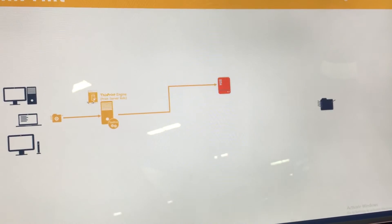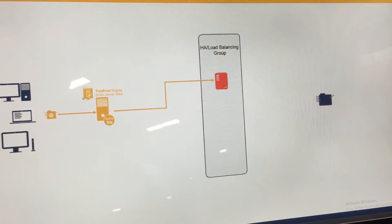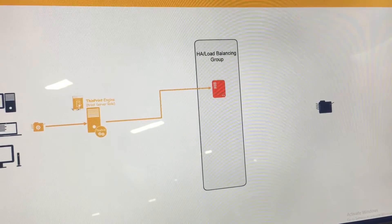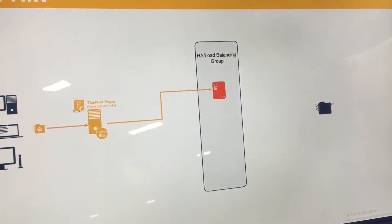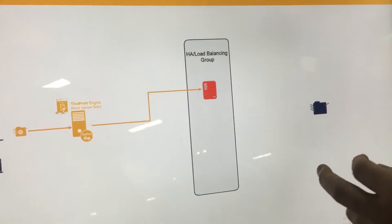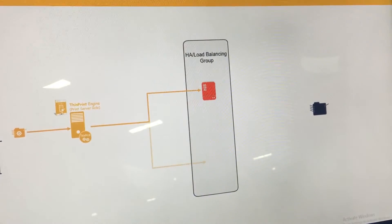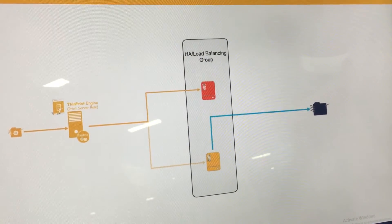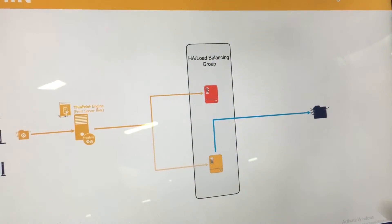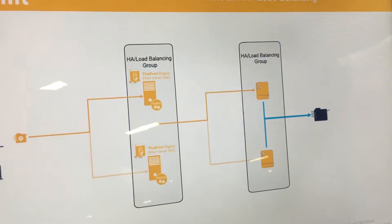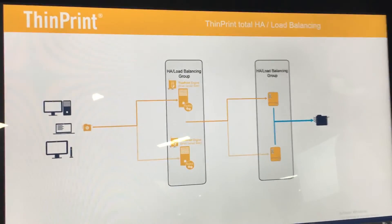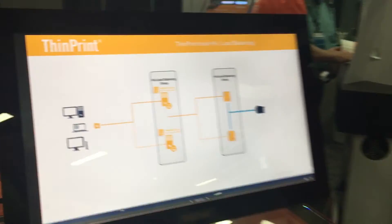we can also define a high availability load group on the office or remote location side, allowing us to redirect the print job automatically without the user lifting a finger, so that your print job is re-sent to the next available hub at the location — ensuring that no matter what happens in your environment, your users will be able to get their print jobs as quickly as possible, every time.